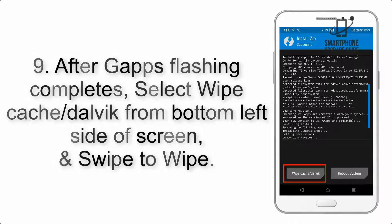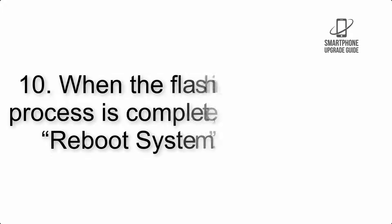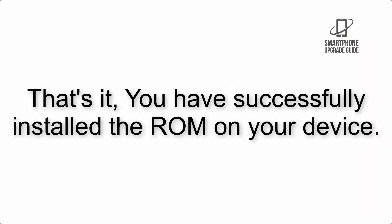Step 9: After GApps flashing completes, select Wipe Cache and Dalvik from the bottom left side of the screen and swipe to wipe. Step 10: When the flashing process is complete, hit Reboot System. That's it — you have successfully installed the ROM on your device.